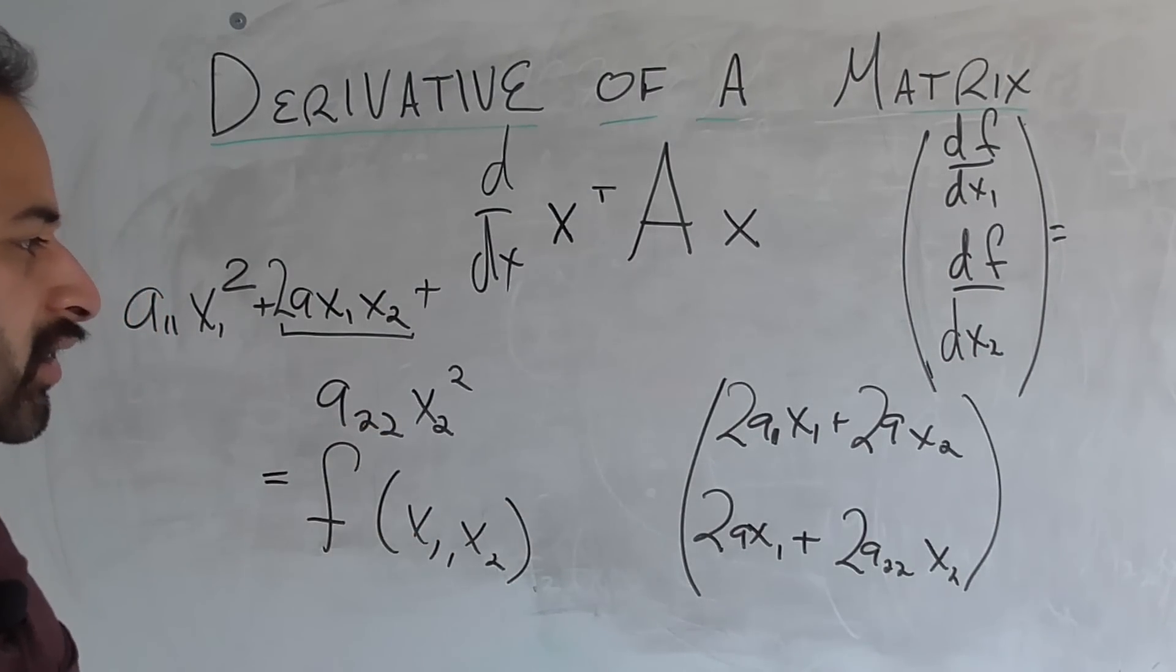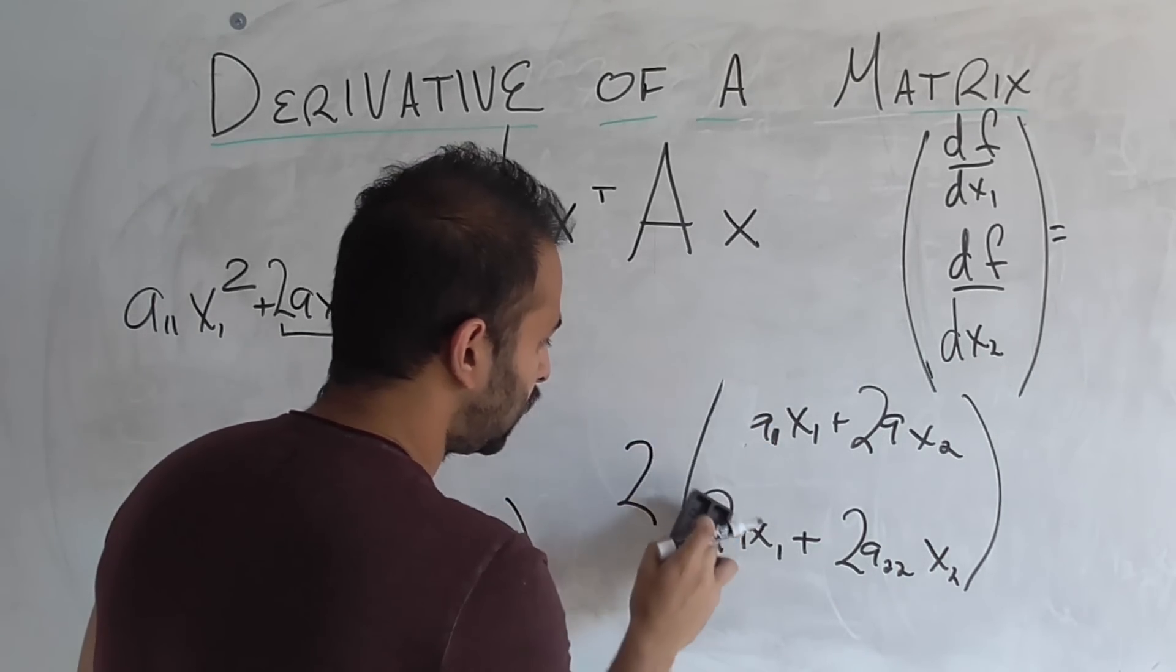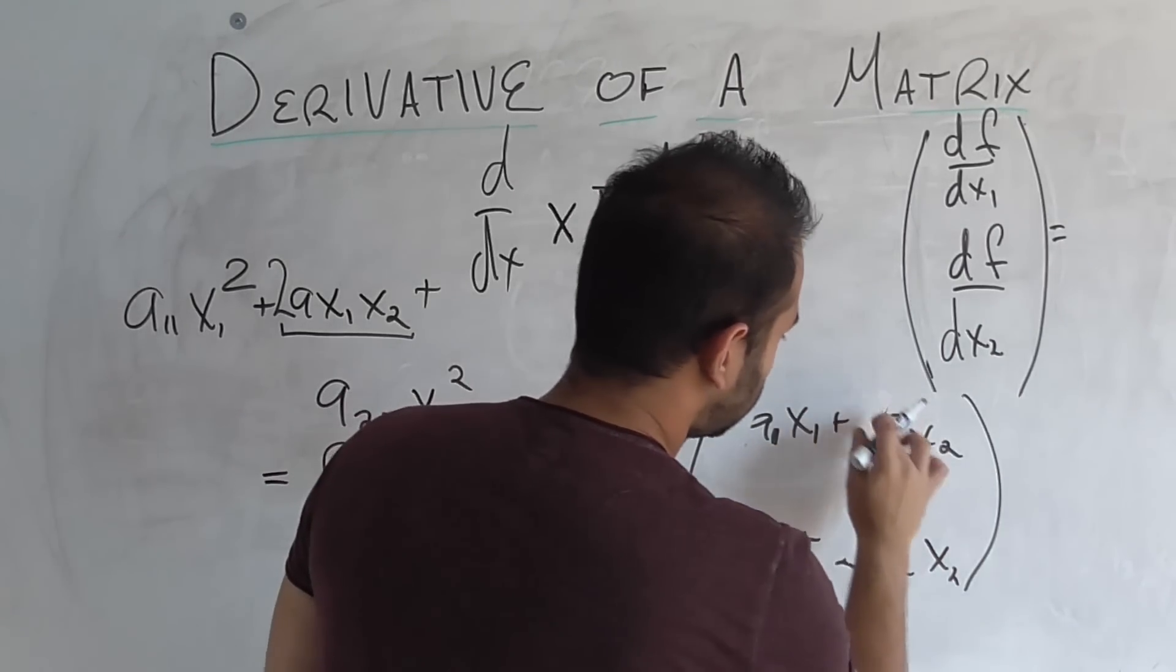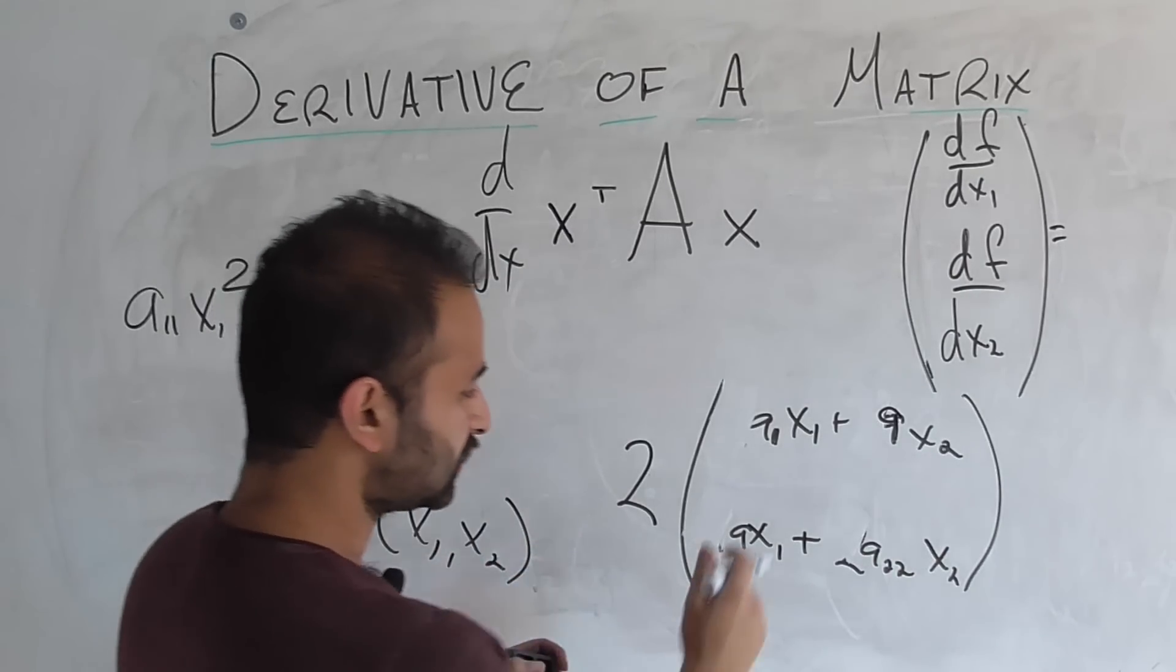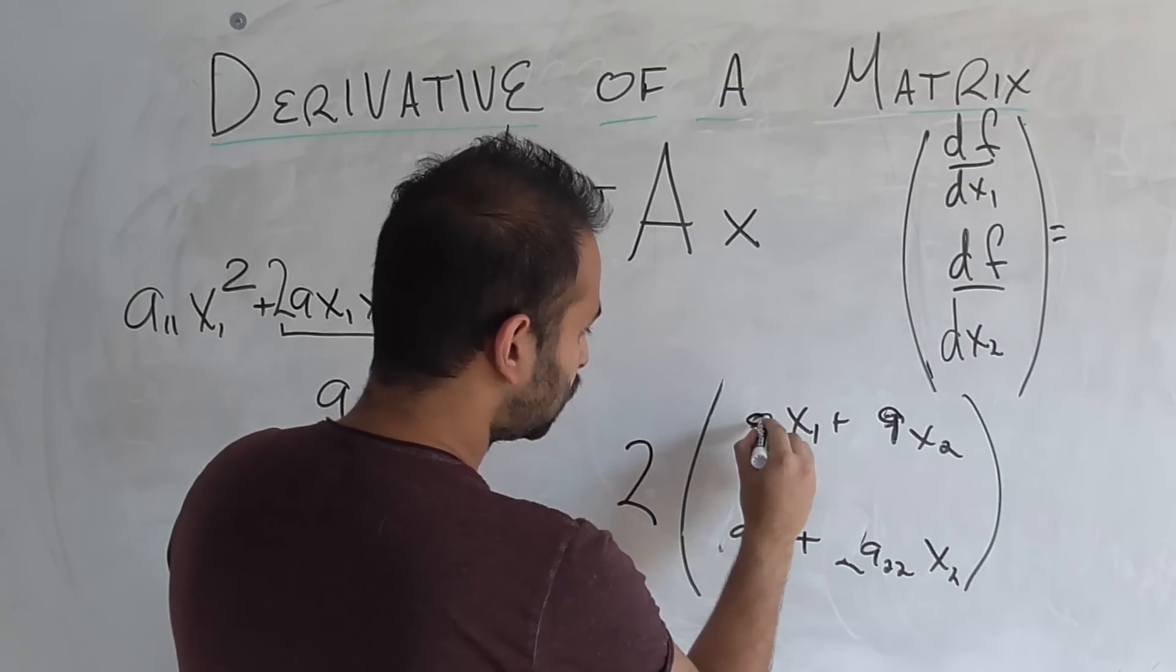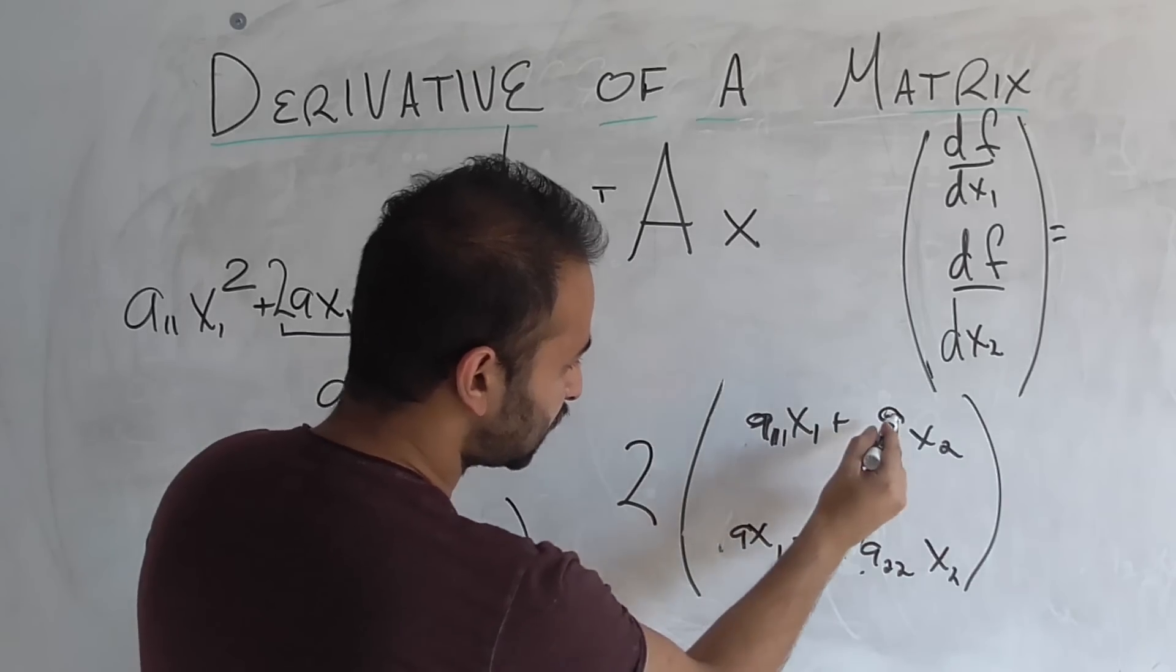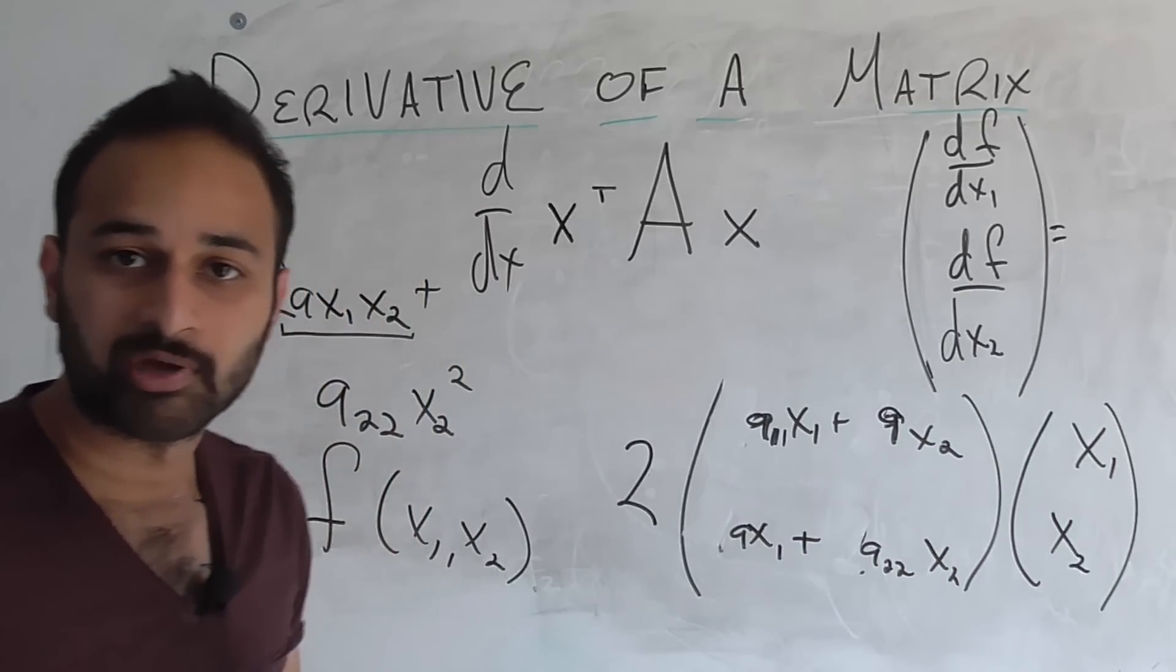Looks a little bit ugly. Can we clean it up? We can definitely pull a 2 out. So that's a little bit cleaner. Now what else can we do? We can notice that this guy is actually just the multiplication of, if I leave this a11 here, I leave this a22 here, I leave this a and this a here, and I pull out the x1 and the x2.